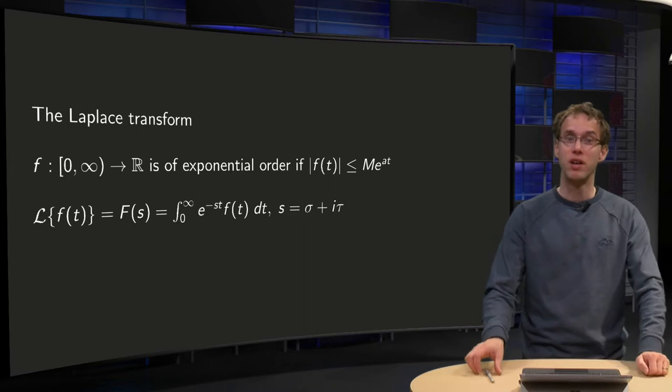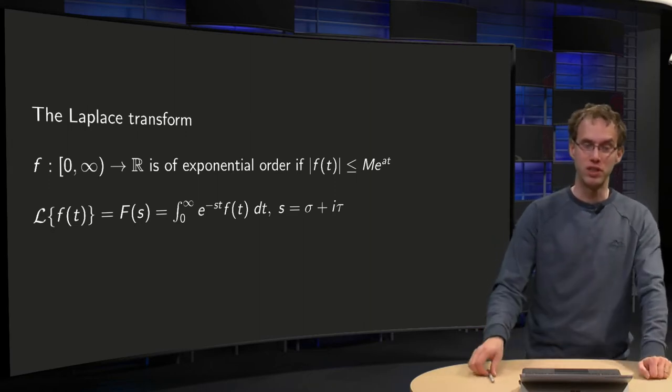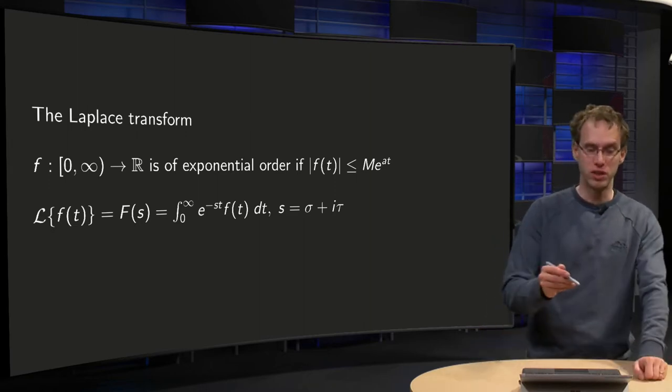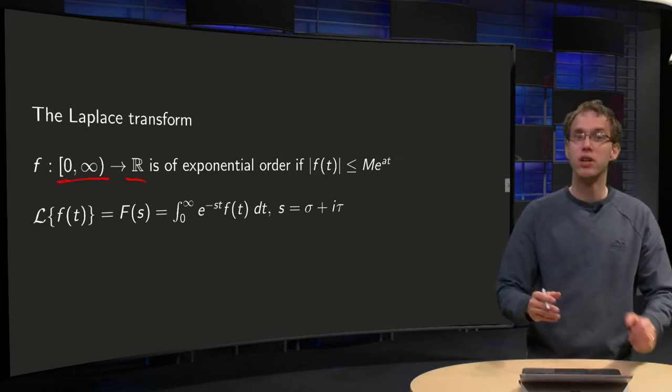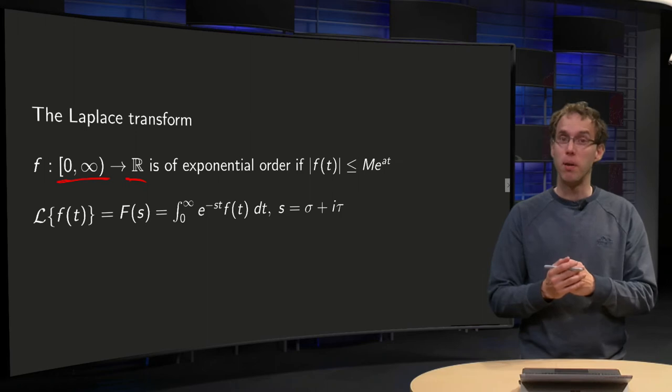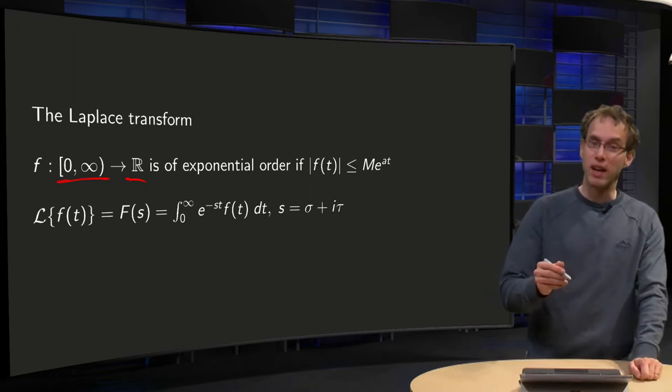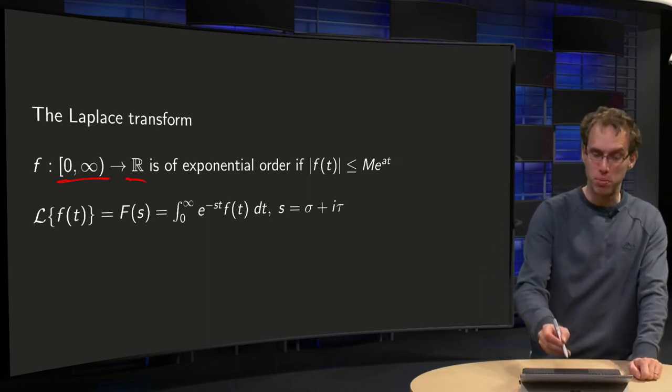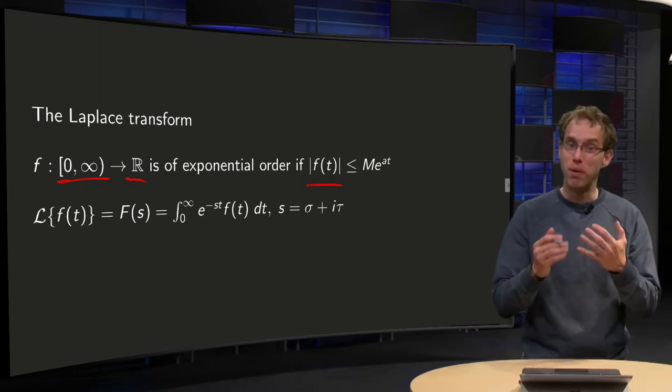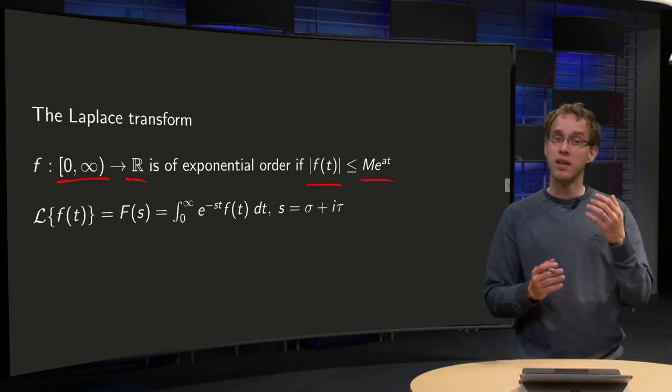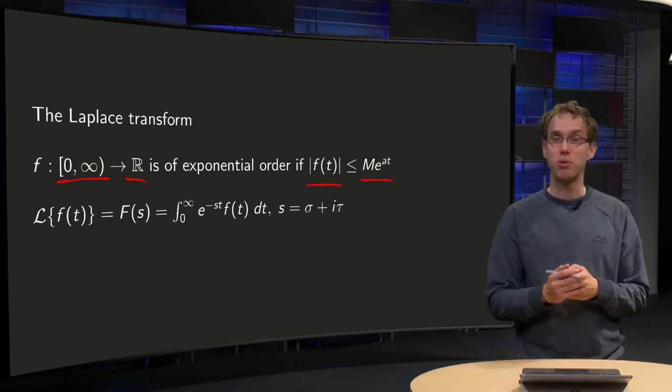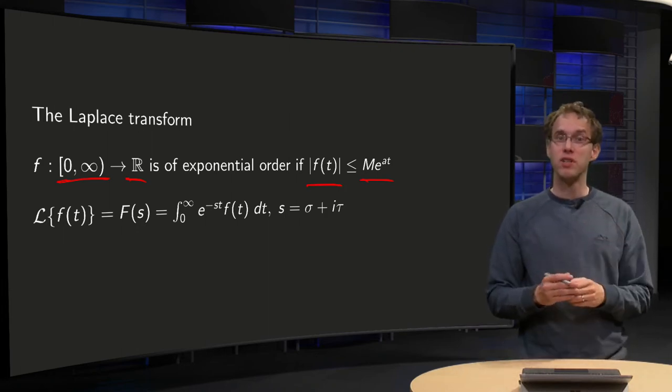First of all, can we do that for all functions? Well, for a lot of functions. If you have a function f from 0 to infinity to ℝ, so we only put positive values in our f, then our function f is of exponential order if f is bounded by some exponential function M times e^(at), where M and a are constants and a is positive.